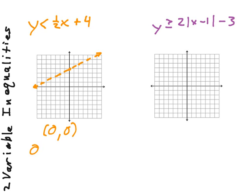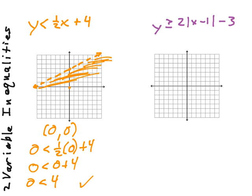Y is zero, and we want to know if that is less than 1/2 of x being zero plus 4. Well, half of zero is zero, zero plus 4, zero is less than 4, so our test point works out. Now what that means is that where our test point is located is in our solution set. So everything on that side of our boundary line is also included in our solution set. So that half of the graph will be shaded.